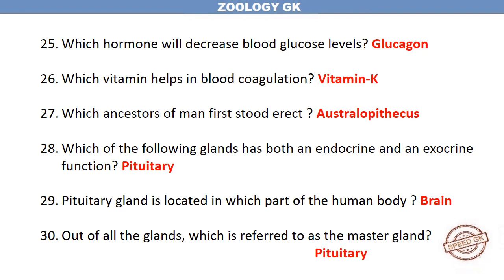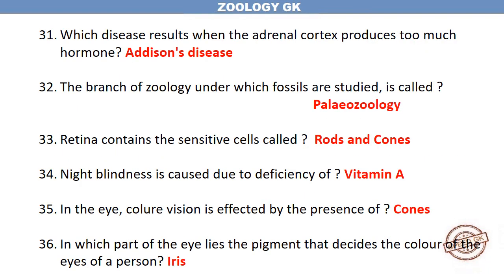Out of all the glands, which is referred to as the master gland? Pituitary. Which disease results when the adrenal cortex produces too much hormone? Addison's disease. The branch of zoology under which fossils are studied is called Paleozoology.